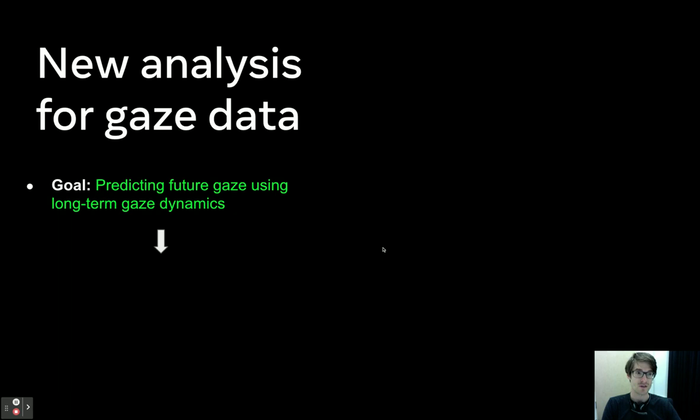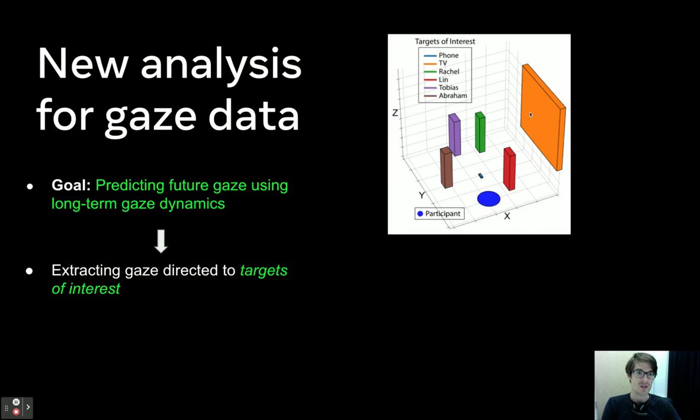We came up with a new framework suitable for AR and VR applications, where we extracted the gaze directed only to our target objects. These targets of interest were all the objects and people conveying information during the meeting. This pre-processing preserved the relevant information in the gaze for interaction, namely, what is the target of attention, while it also reduced the problem space from coordinates to only few target objects.